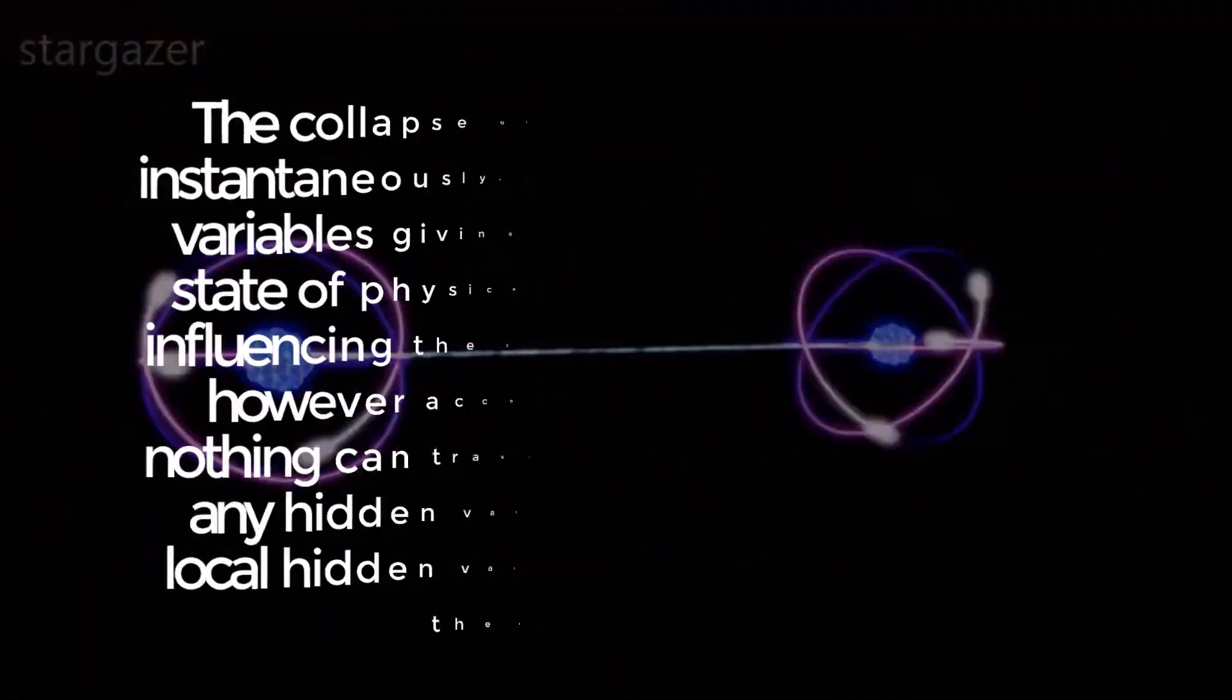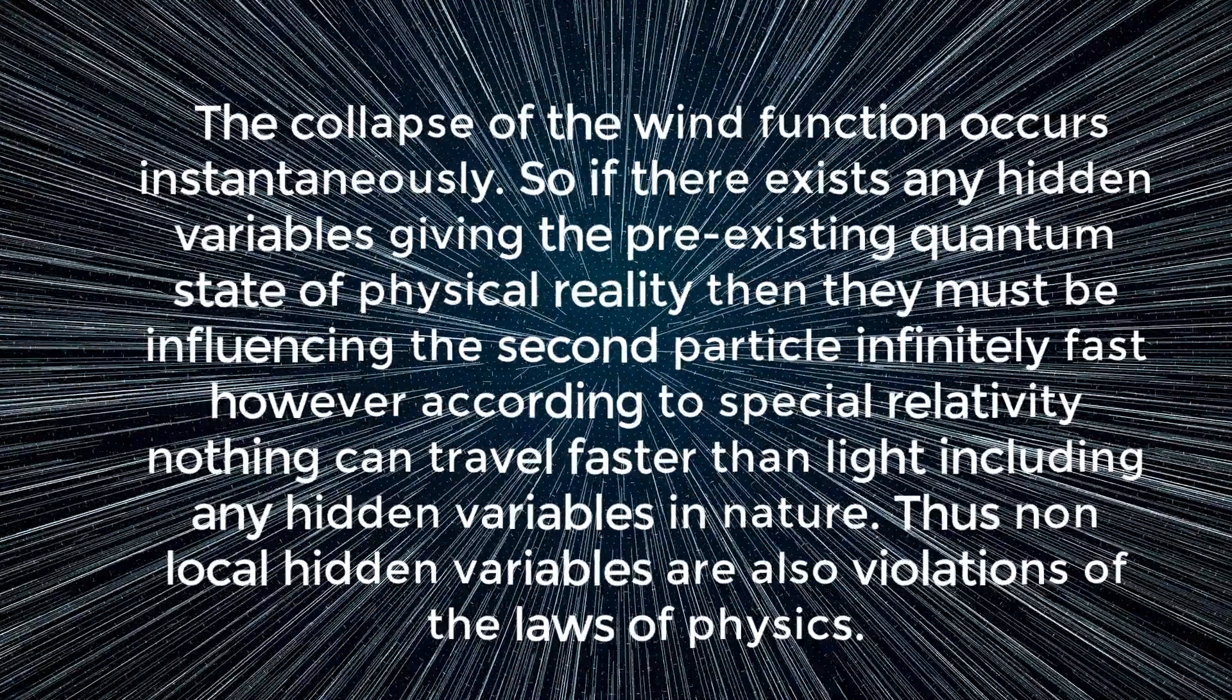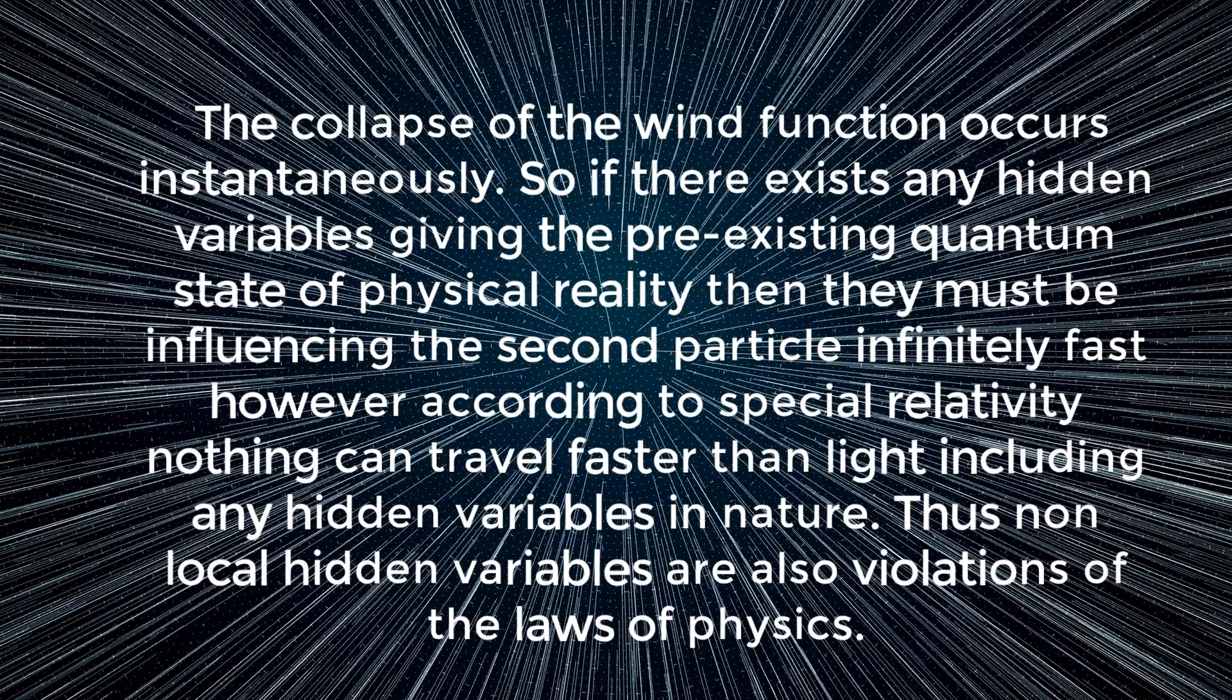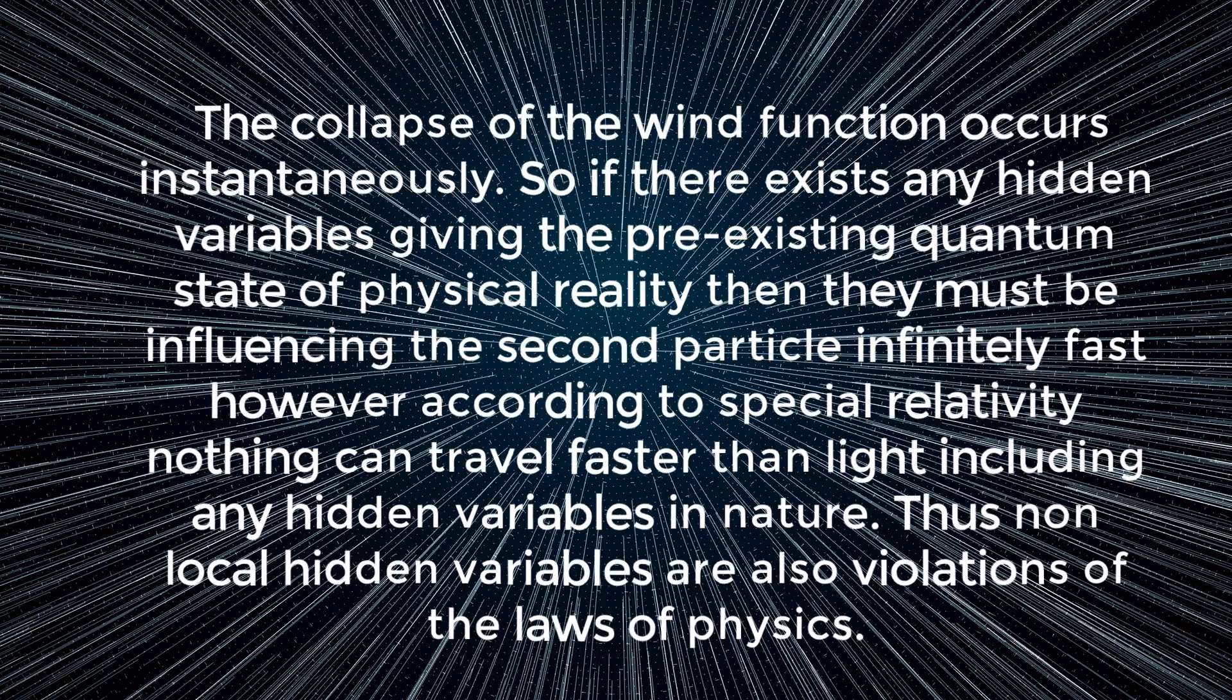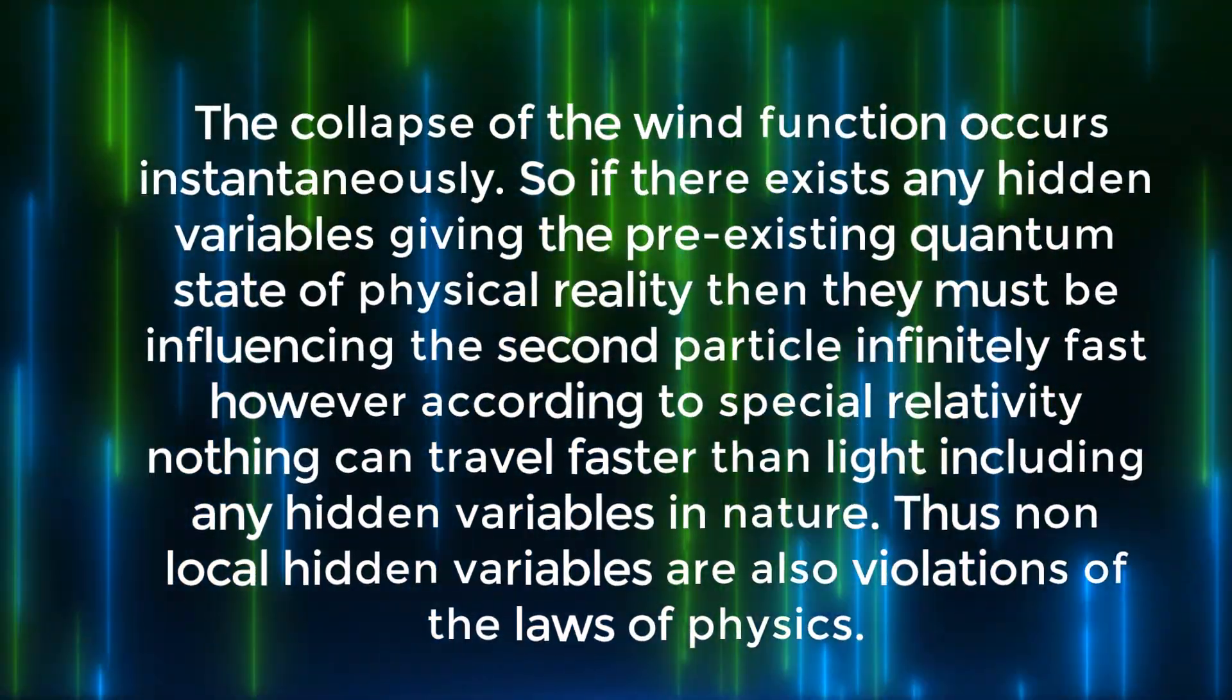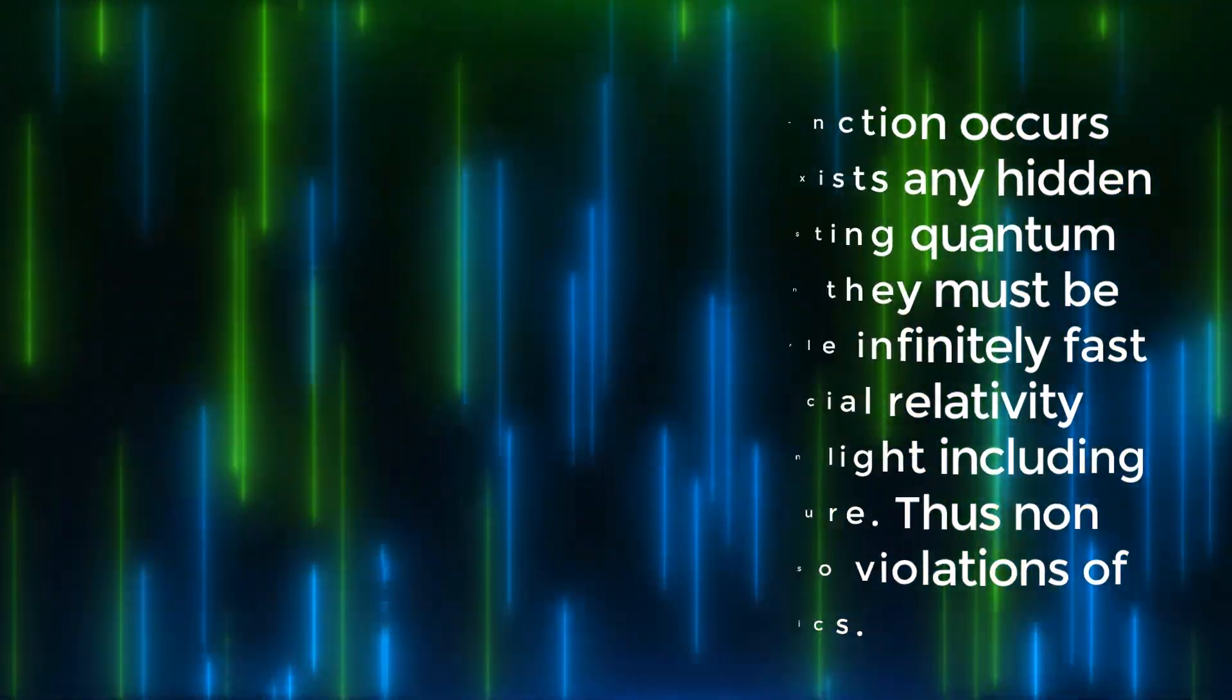The collapse of the wave function occurs instantaneously. So, if there exists any hidden variable theories, given the pre-existing quantum state of physical reality, then they must be influencing the second particle infinitely fast. However, according to special relativity, nothing can travel faster than light, including any hidden variables in nature. Thus, non-local hidden variables are also violations of the laws of physics. This fact alone demonstrates that whatever is linking these entangled particles cannot be in physical spacetime, as physical spacetime entails existence within spacetime.